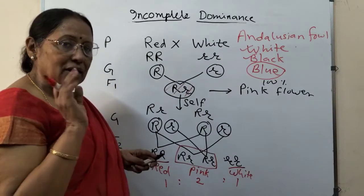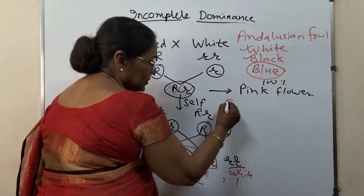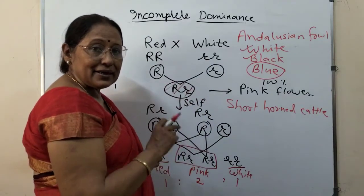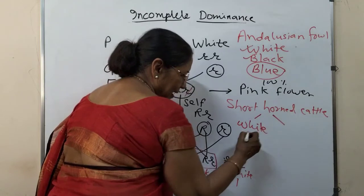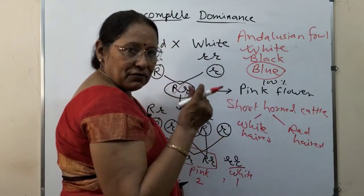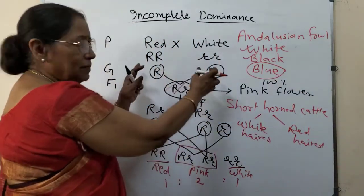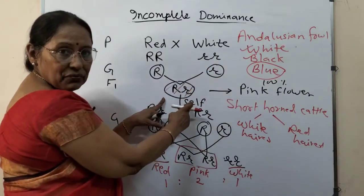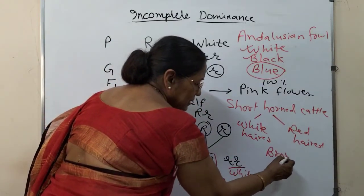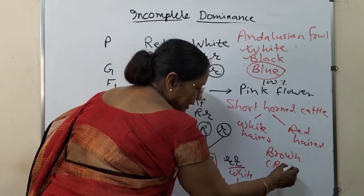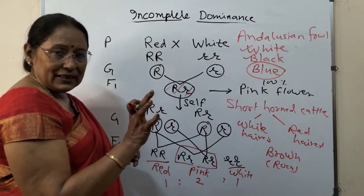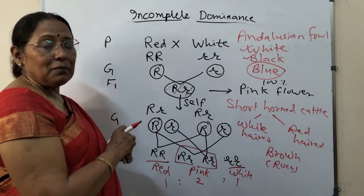Let me give you one more example—it is that of short horned cattle. This short horned cattle has two varieties—one is white haired, another is red haired. Both are pure in their form. When they are crossed, the same thing, go on applying. When they are crossed then we get the heterozygous which has brown hair. This brown hair or roan variety, which is simply a heterozygous, again appears in F2 in 50 percent. This is incomplete dominance.